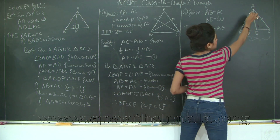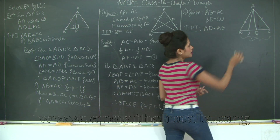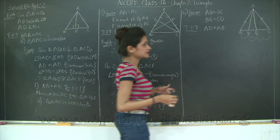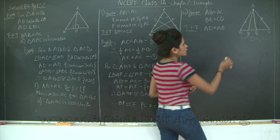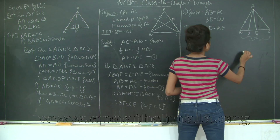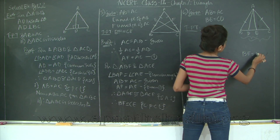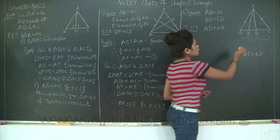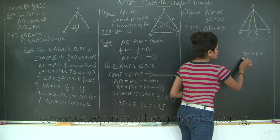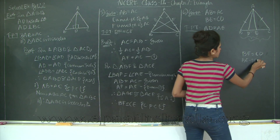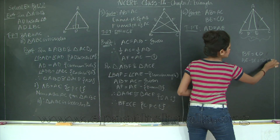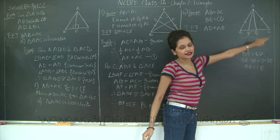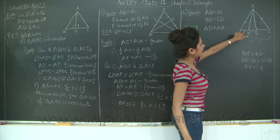In these two triangles, AB equals AC so the opposite angles are also equal — from theorem 7.2 on isosceles triangles. Also, we can show BD is equal to CE. It is given that BE is equal to CD. If we subtract DE from both sides — BE minus DE equals CD minus DE — then BD is equal to CE. Marking this as statement 1.